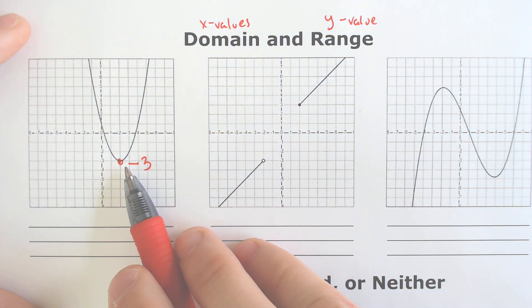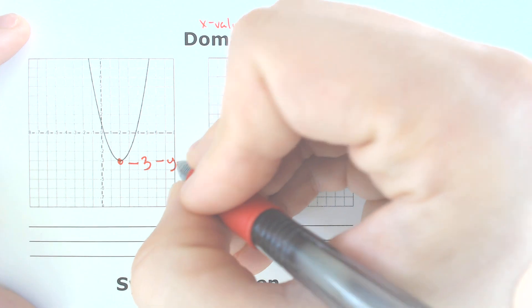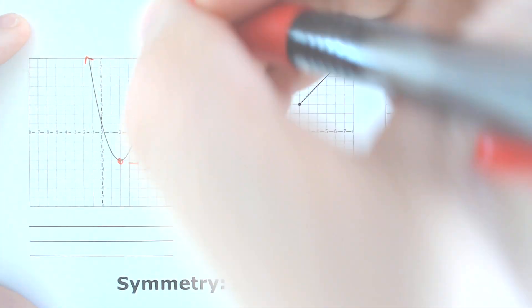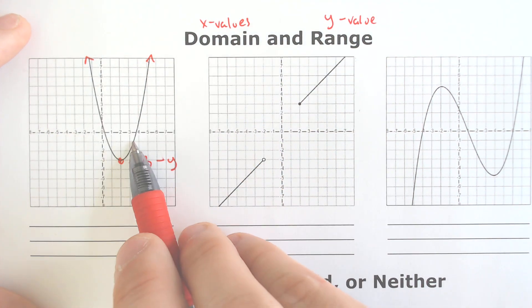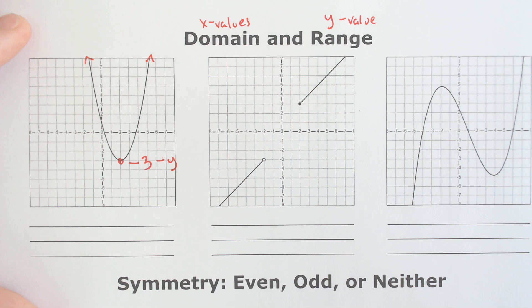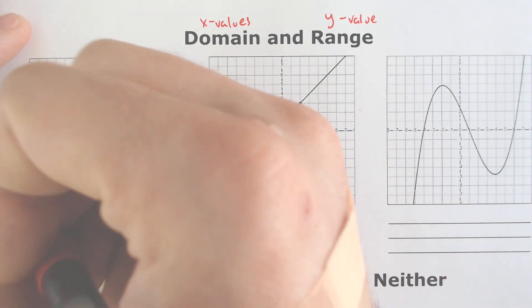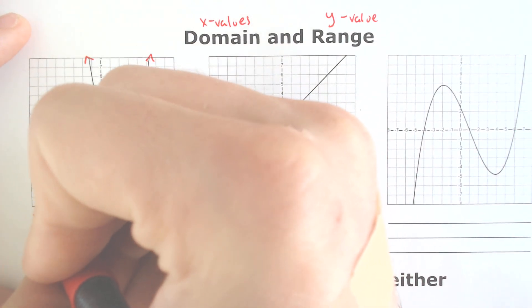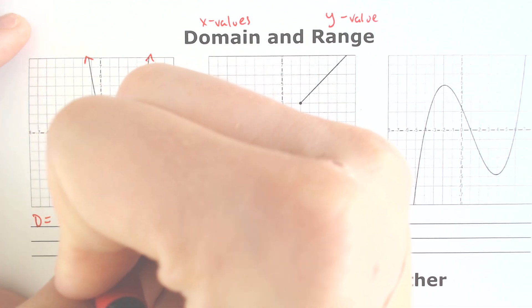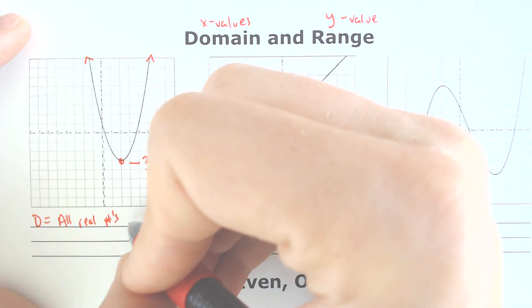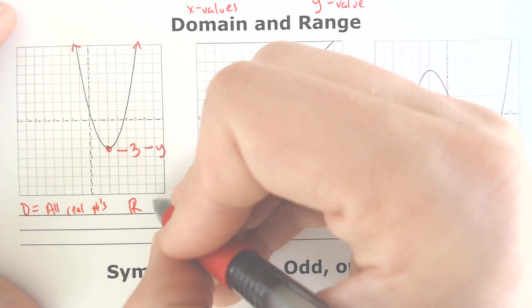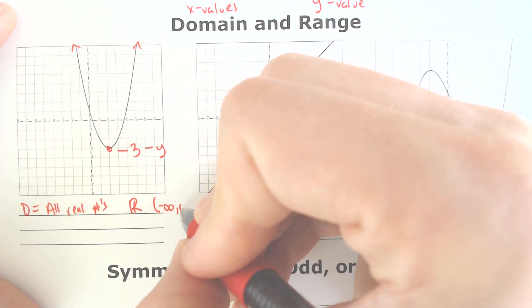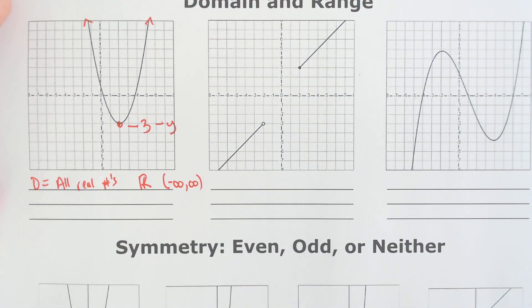For this first problem, the lowest value we have is negative 3, which is a y value. But look at the domain — even though it doesn't look like it keeps going, there are arrows. That means it's going to the left forever and the right forever, so the domain is going to be all real numbers. You could also write the fancy R for the real set, or negative infinity to positive infinity. All three of those are ways that you could write it.